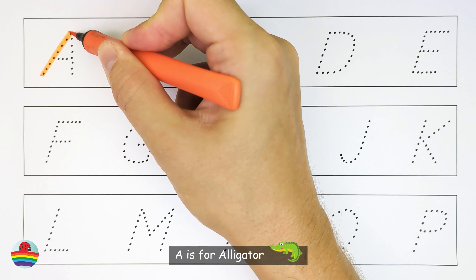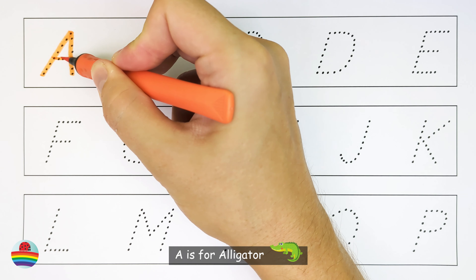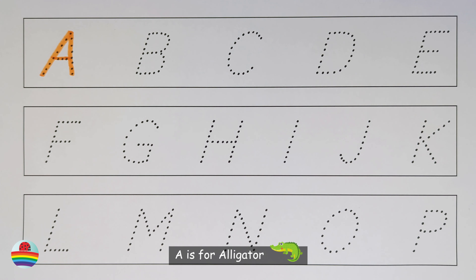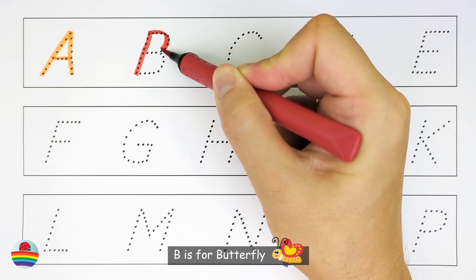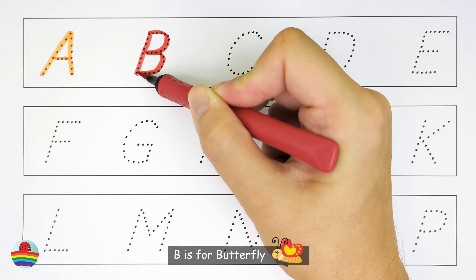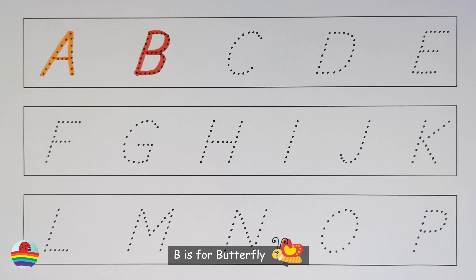A. A is for alligator. A. B. B is for butterfly. B.